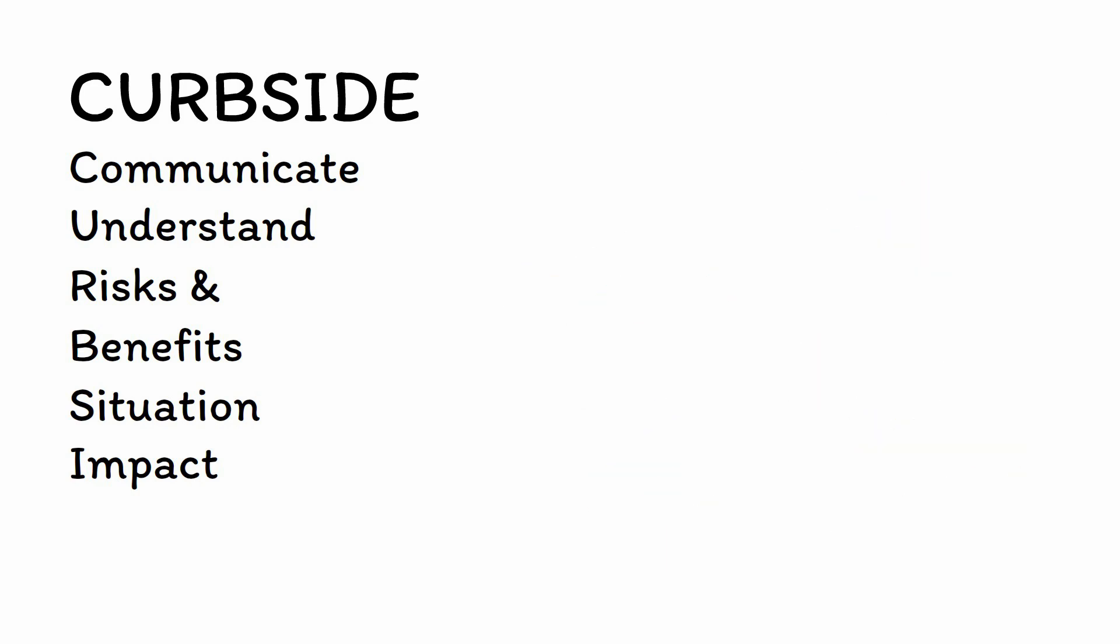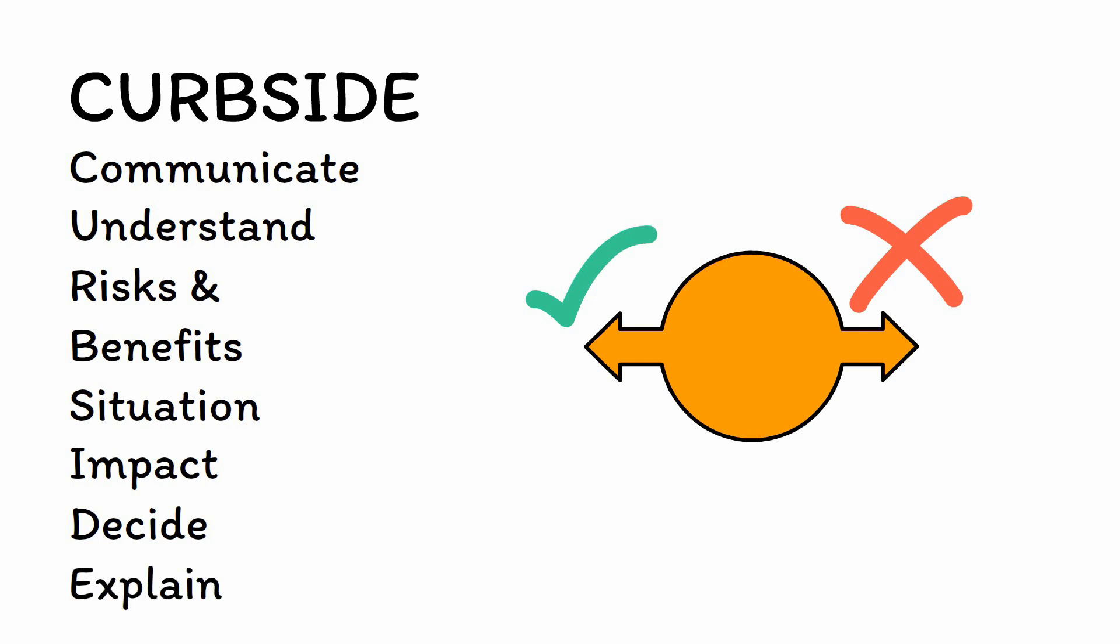If they can understand the impact of various medical treatments, then the next step is for them to decide on a course of action by clearly and consistently expressing a preference for one option over another. Patients must not be equivocal or wavering in their response and should be able to not only state a clear choice, but also to explain their decision in a way that takes into account all of the above steps, including their understanding of the situation, the risks and benefits of the proposed treatment, and the impact that their choice will have on their condition.